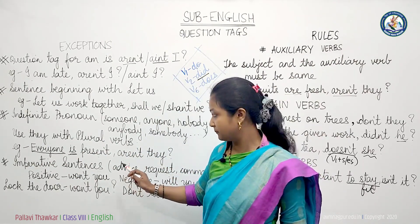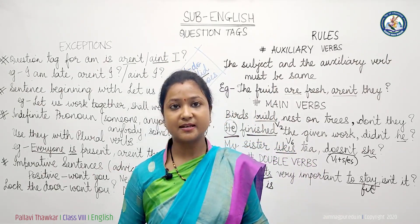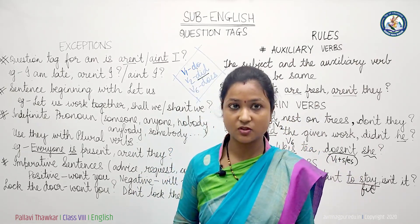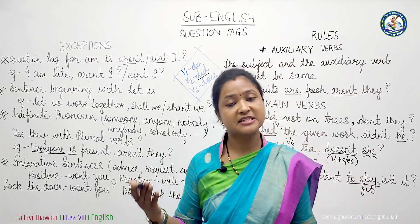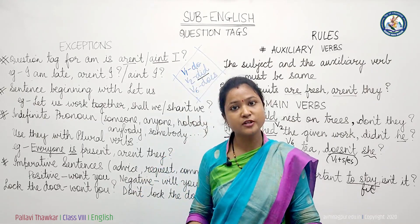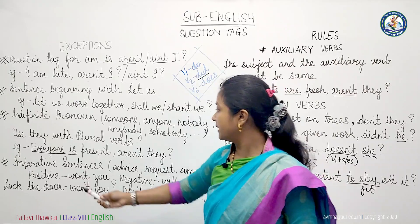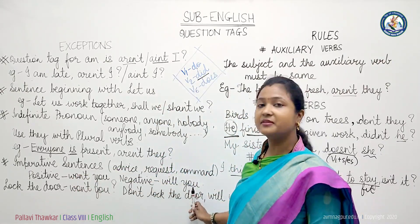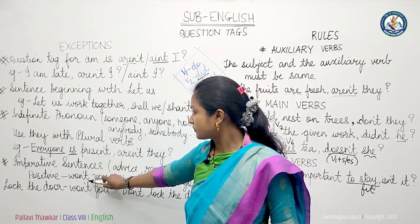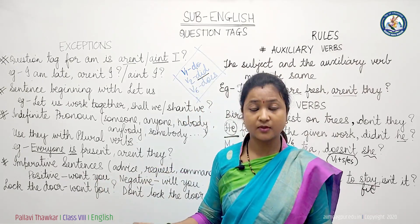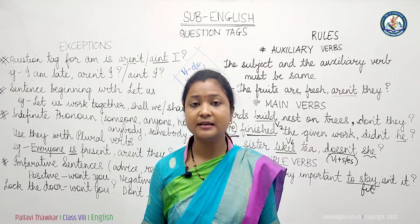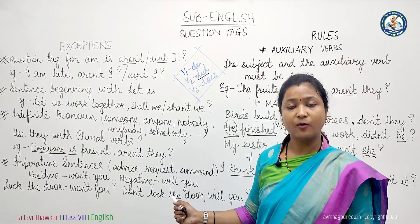If the sentence is an imperative statement — a command, request, or advice — we check whether it is positive or negative. For a positive imperative, we use 'won't you', and for a negative imperative, we use 'will you'. For example, 'Lock the door, won't you?' — positive statement, so negative question tag. 'Don't lock the door, will you?' — negative statement, so positive question tag.